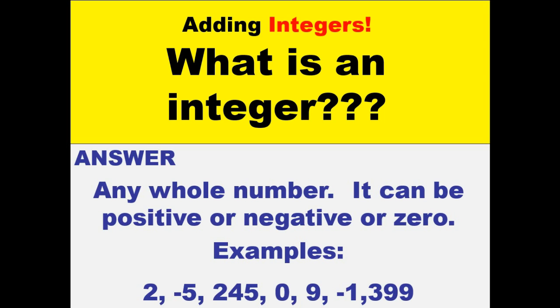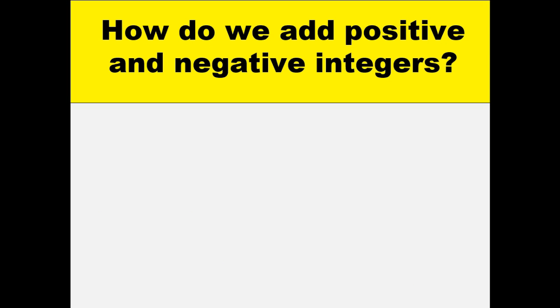Examples of integers include positive 2, negative 5, 245, zero, positive 9 or just 9, negative 1, and 399 or positive 399.